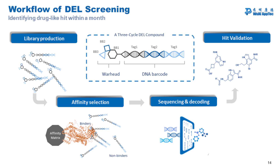How does the workflow look? The most time-consuming part is library production. We build libraries like a Lego: we start with a first building block, add a DNA code describing it, then add a second building block and encode the recipe again in the DNA barcode. This process can repeat for two to four cycles. The recipe of the compound is hidden in the DNA barcode. In the next step, we go to affinity selection, which is very similar to a pull-down assay. Then we send the samples to sequencing and decoding, and our computational chemists translate the DNA barcodes into structures and select the most promising hit candidates.